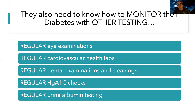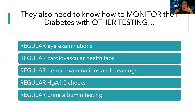Patients also need to regularly get their hemoglobin A1c checked at their doctor visits. This is the lab you can't cheat — it tells how your blood glucose has been over two to three months. It should be checked regularly, usually every three to six months. It helps the doctor determine if the patient's medications and diet are working, and even if someone is eating well and taking medications, their A1c may still be high due to insulin resistance. Additionally, regular urine albumin testing will be done to look for kidney problems.